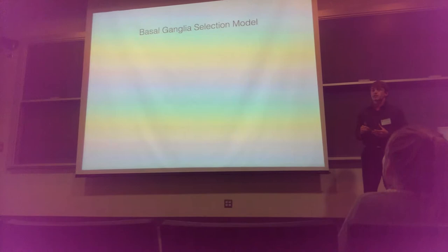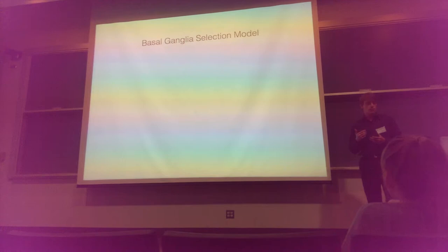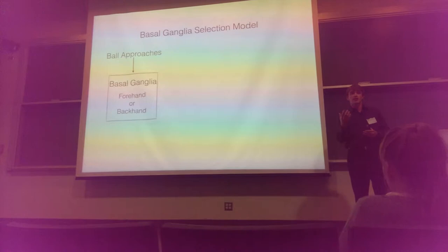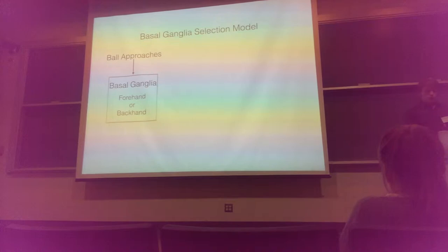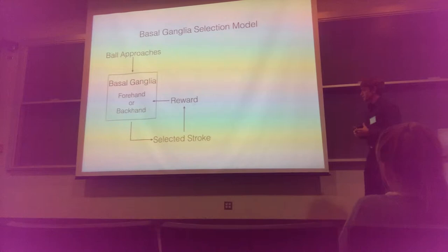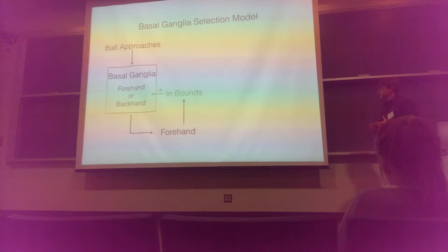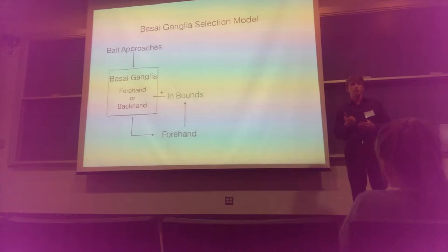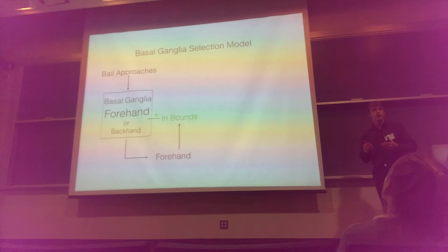We can think of this overall model as being composed of two simpler submodels. The first is the basal ganglia selection model. Running through our tennis example: the basal ganglia takes in some indicator that the action should be initiated — in tennis this is when the ball comes at you — then it makes a selection, forehand or backhand, and this selection results in some reward. A positive reward means you hit the ball back; a negative reward means you missed and hit it into the net. If you selected a forehand and got the ball back, that positive reward reinforces the forehand, making you more likely to select it again in the future.